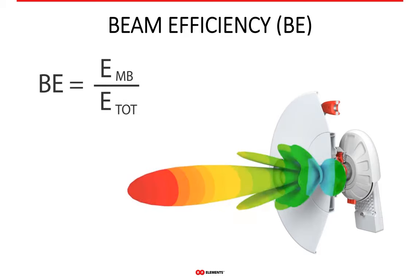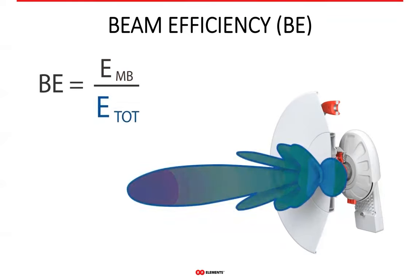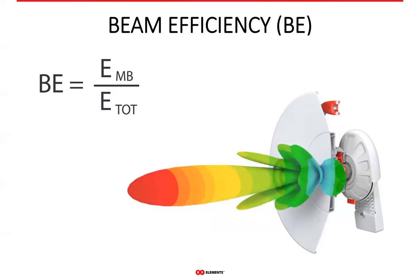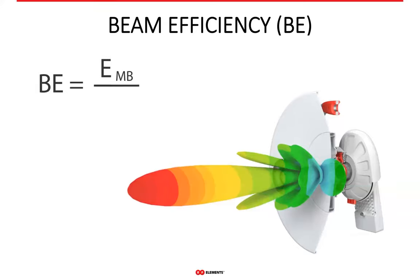The higher the beam efficiency of the antenna you use, the better your network will perform, and end users will also perceive the services you provide in a better way. Beam efficiency is an antenna parameter not only to know about, but to actually factor in when deciding how to deal with interference issues you might be having.